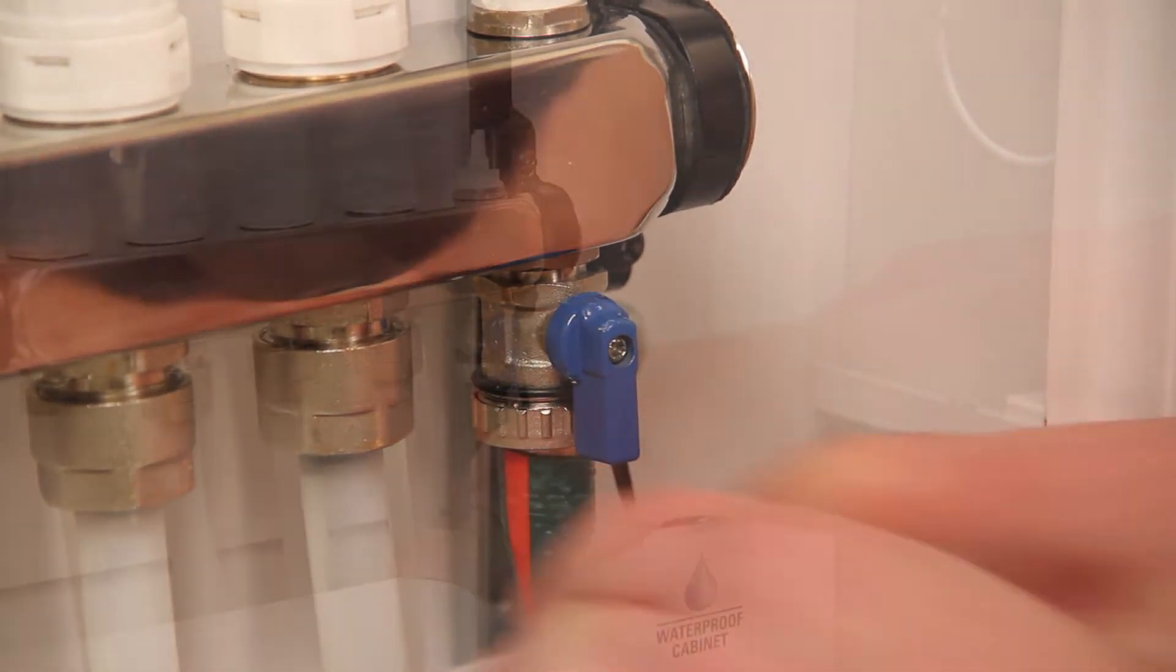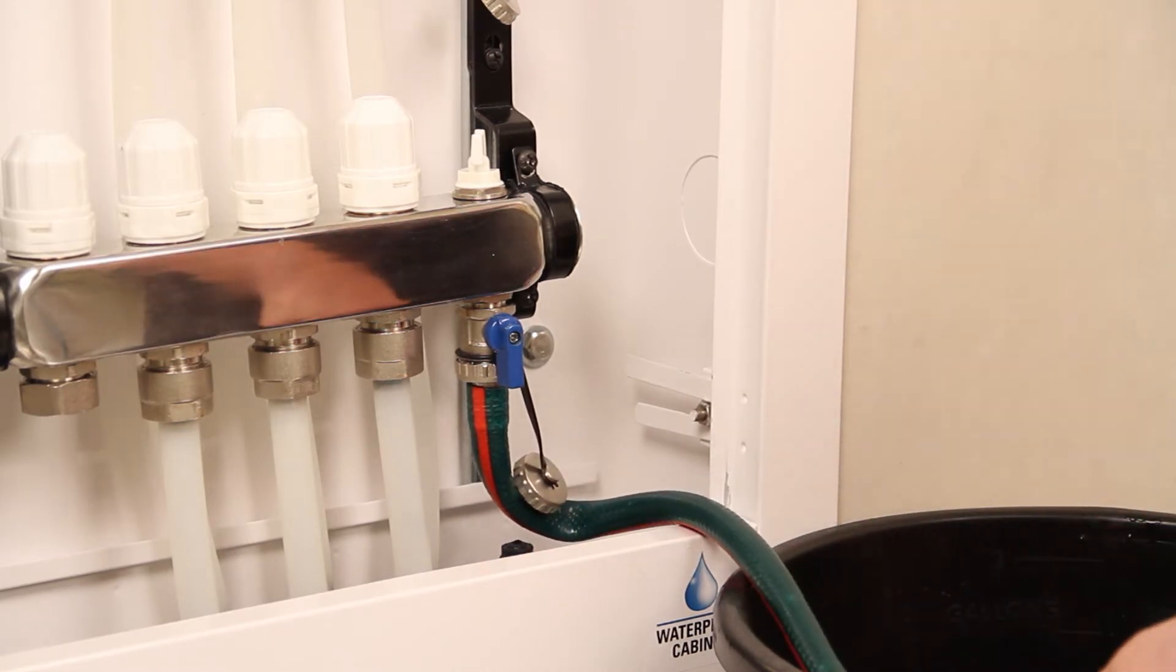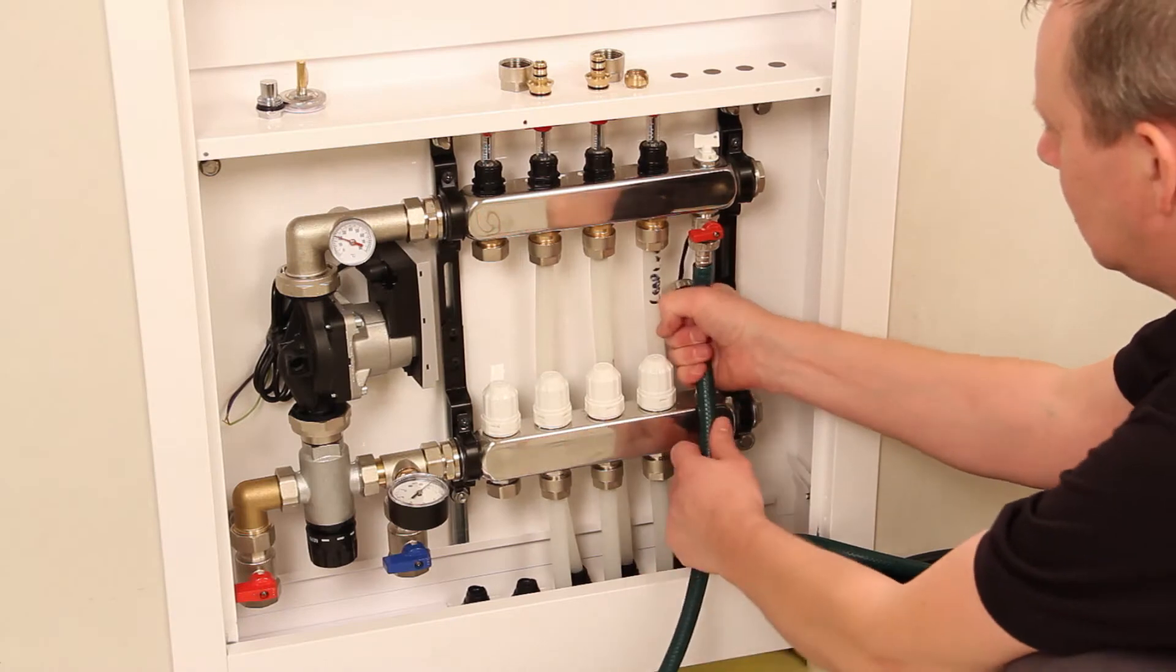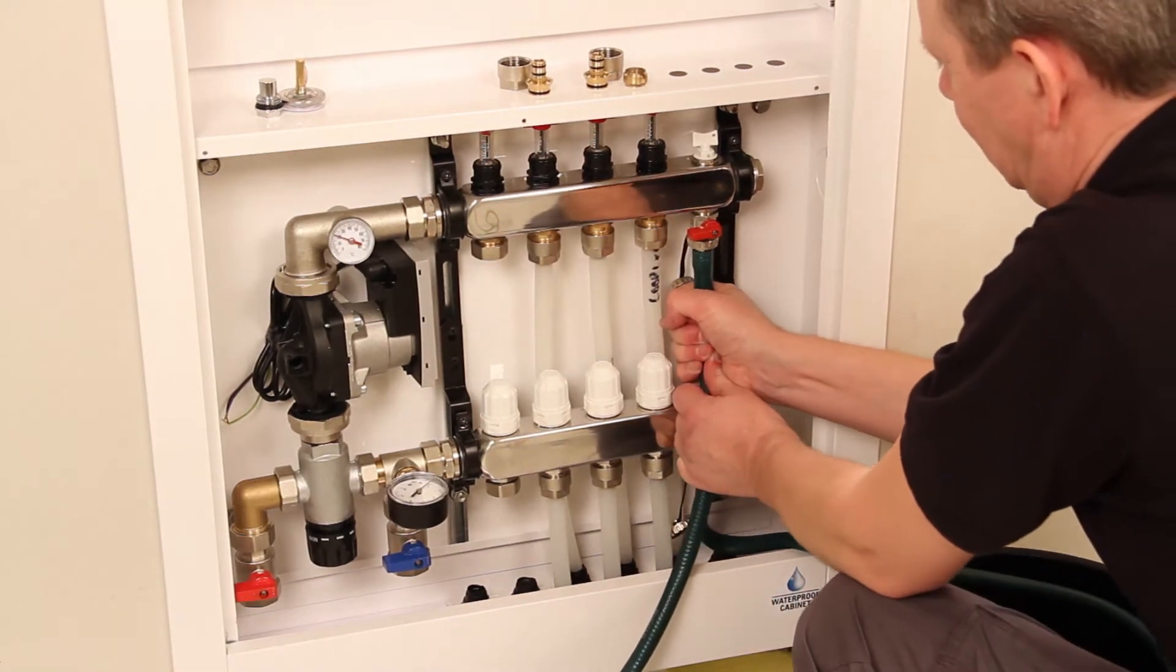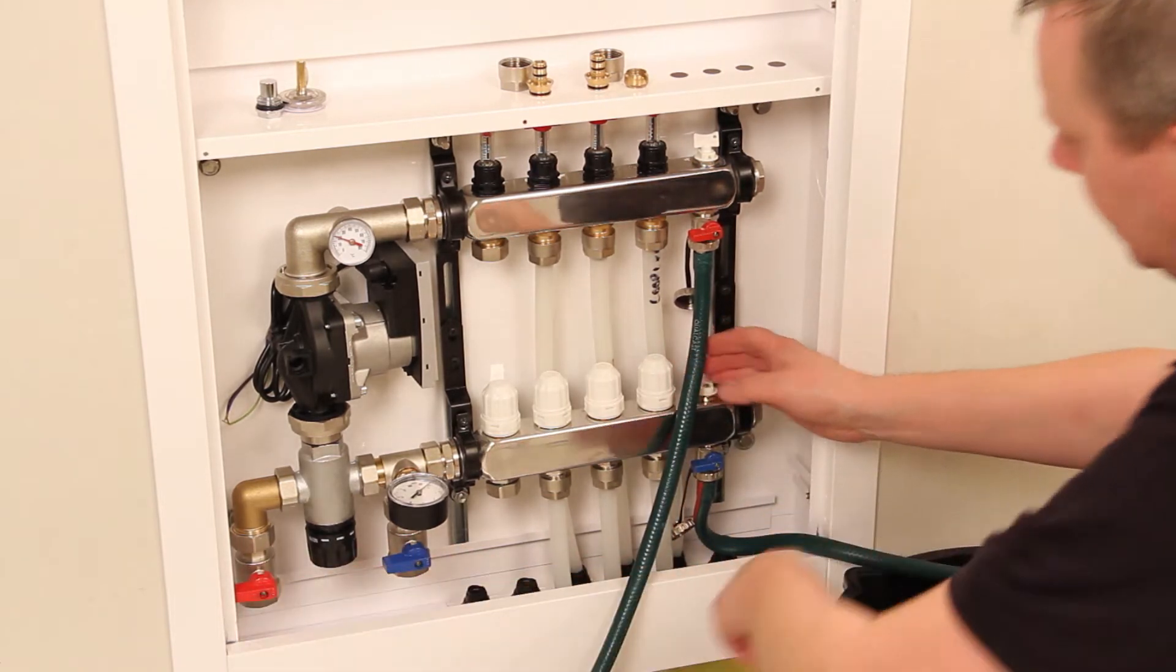Connect a length of hose to the lower return drain off point, place the other end into a bucket to catch any water as it passes through the hose. Connect cold water main supply hose to the top flow bar drain off point and secure with a jubilee clip if required.